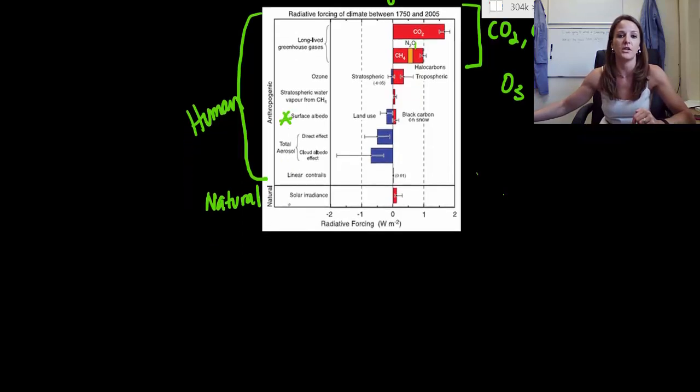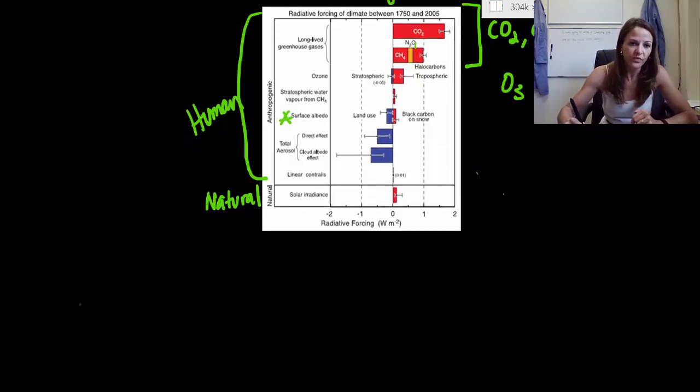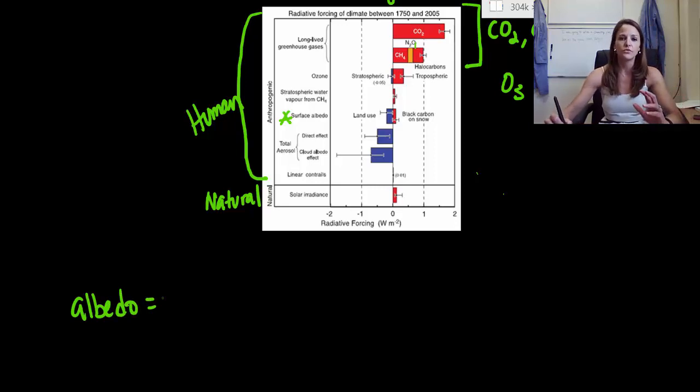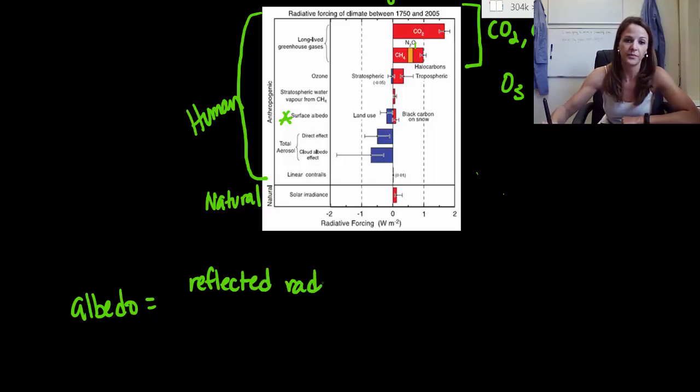So now let's look at the next one, which is our surface albedo. So an albedo, especially at our surface here, is simply a relative ratio of our incoming radiation versus our reflected radiation. So essentially it's just our reflected radiation all over our incident radiation.